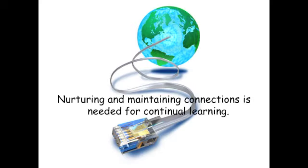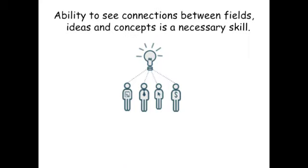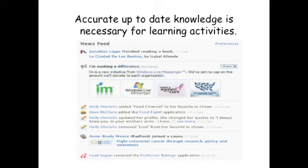A process that is essential for this learning theory is the nurturing and maintaining of connections. This process is often called aggregation. It is very important for the members of a network to continue to bring together and distribute fresh content and materials for others to access. Then learners may pursue whichever content pertains to their own personal needs. A necessary skill for this process to flourish is the ability to see connections between ideas, fields, and concepts. Technology has made this process much easier. Blogs and online bookmarking tools have given us an organized method of grouping content. In addition, social networks have allowed us to discuss this information more quickly and freely. This is often called remixing.